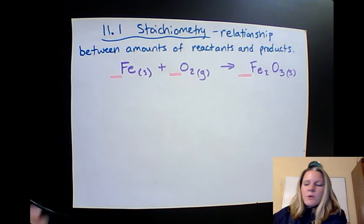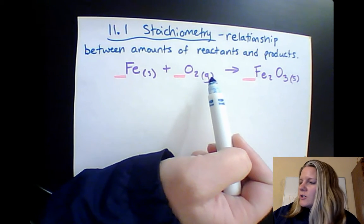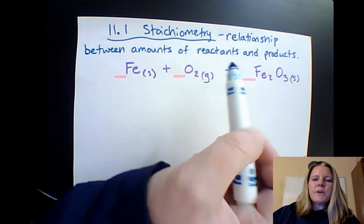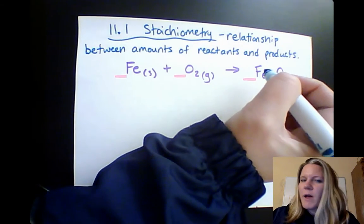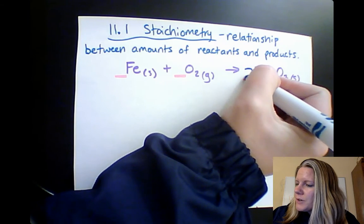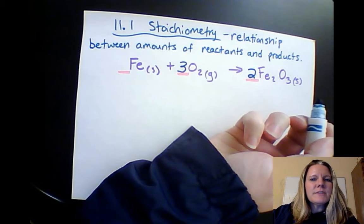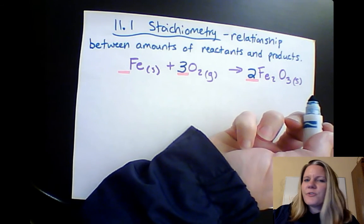So we'll balance this equation. Notice that we have three oxygens on the right, two oxygens on the left. So we're going to need to balance this by switching our odds and evens. Put the two over here and the three here. That way we have six oxygens on the left and six oxygens on the right.